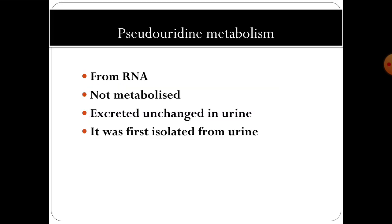Another product, pseudo-uridine, is obtained from RNA and is not at all metabolized. It is excreted unchanged in urine. This is significant from a historical point of view because it was first isolated from urine.